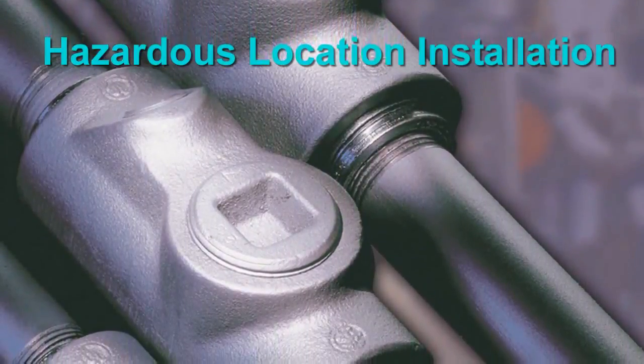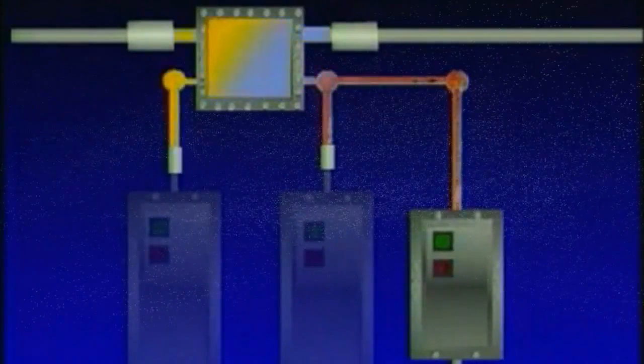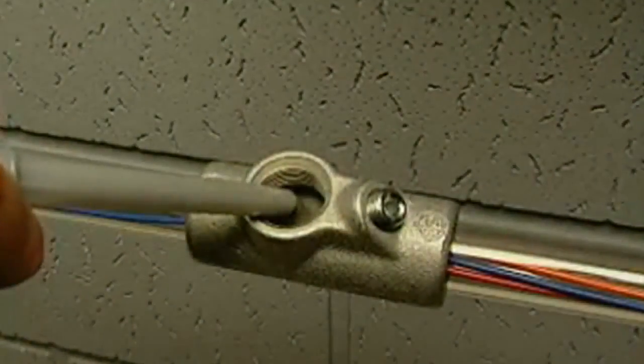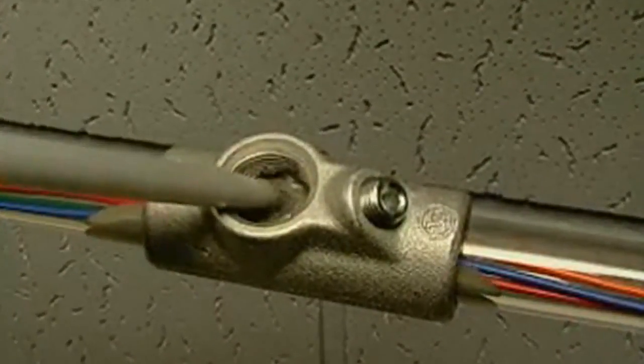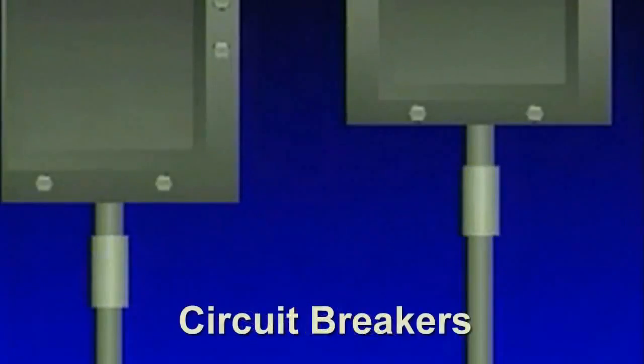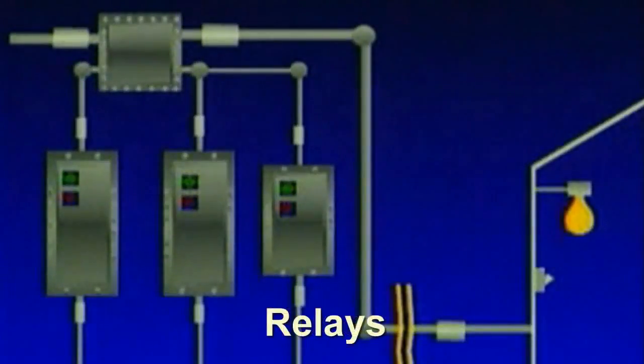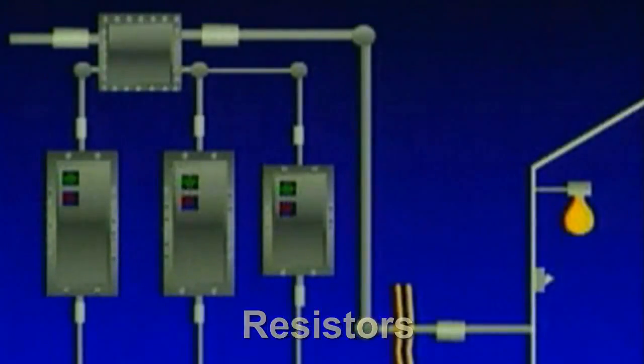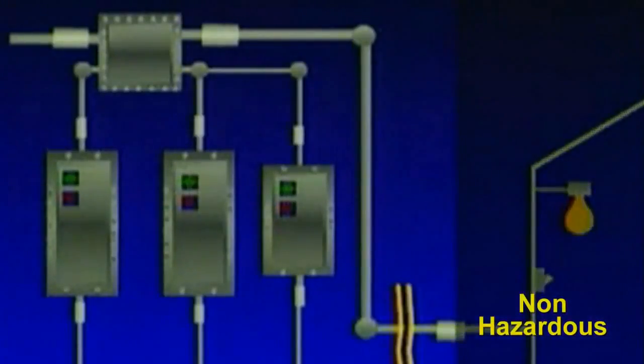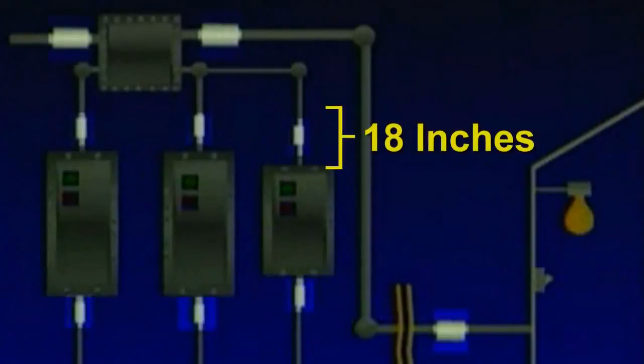Proper installation of hazardous location equipment calls for the use of seals. Special fittings are required to keep hot gases from traveling through the conduit system, igniting other areas in the event of an internal explosion. They are also needed in certain situations to keep flammable dust from entering the dust ignition-proof enclosures through the conduit. Sealing fittings are designed to be filled with a chemical compound after the wires have been pulled; as the compound hardens, it seals passageways for dust and gases. Within each conduit run entering an enclosure for switches, circuit breakers, fuses, relays, resistors, or other apparatus which may produce arcs, sparks, or high temperatures, conduit seals should be placed as close as possible and in no case more than 18 inches from the enclosure.